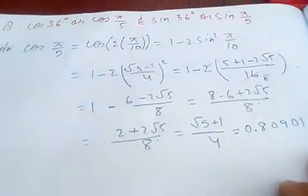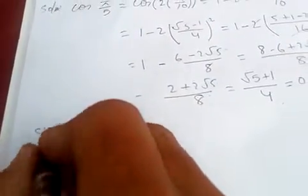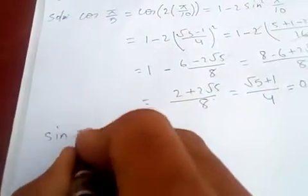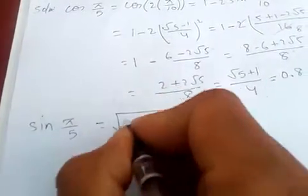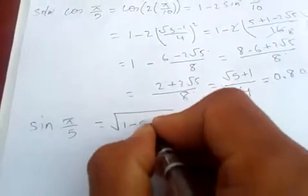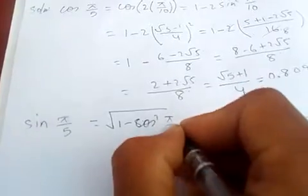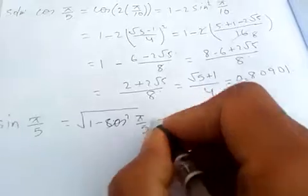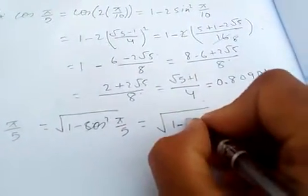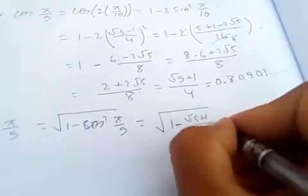And now for sin. sin π/5 is same as √(1 - cos² π/5), which is √(1 - cos² π/5). cos π/5 is this one, so (√5 + 1)/4.